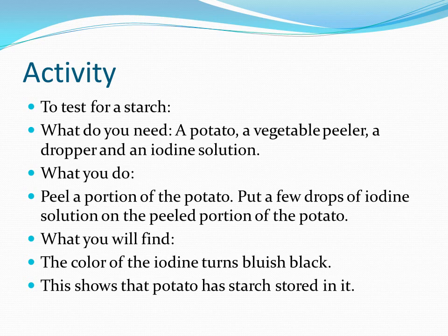To test for starch: take a potato, a vegetable peeler, a dropper, and iodine solution. Peel a portion of the potato and add two to three drops of iodine solution. If the potato turns bluish-black, starch is present; if another color appears, starch is not present. That is activity one. Activity two is on page 69 but requires more time and will be done in class once school reopens.